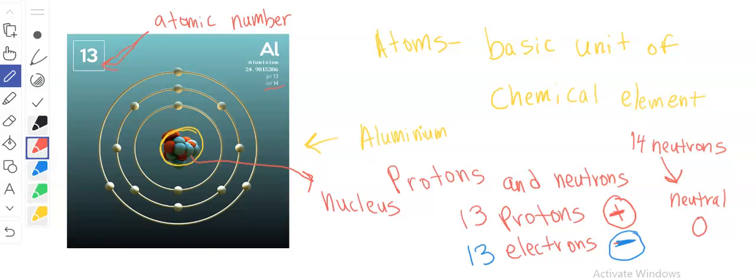Electrons have negative charge, protons have positive charge, and neutrons have no charge. All these components are the basis of an atom—atoms, the basic unit of a chemical element.